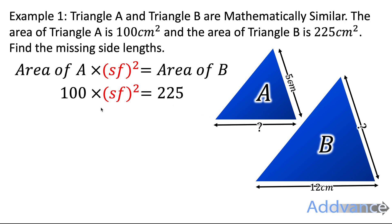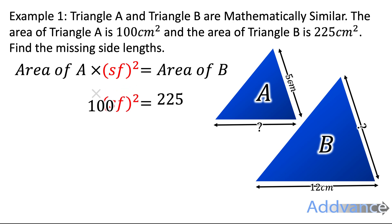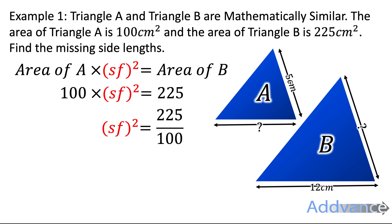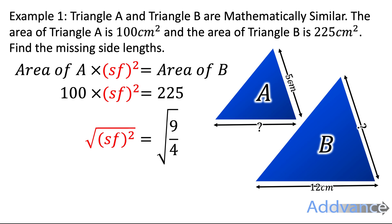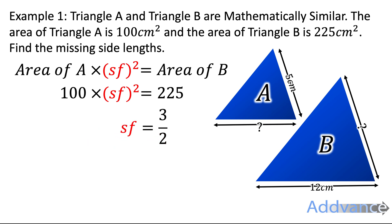It says 100 times, so we do the opposite and divide by 100. Now we have the fraction 225 over 100 equal to the scale factor squared. We simplify that fraction — 225 over 100 simplifies to 9 over 4. That is the scale factor squared. To find the scale factor, we do the opposite of squaring, which is square rooting. We square root both sides and get the scale factor is 3 over 2, or 1.5.